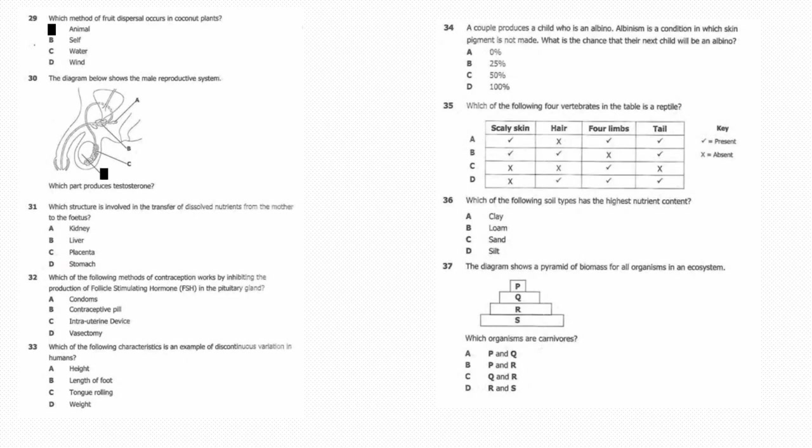Thirty-one: Which structure is involved in the transfer of dissolved nutrients from the mother to the fetus? The answer is C, the placenta. Thirty-two: Which of the following methods of contraception works by inhibiting the production of follicle-stimulating hormone in the pituitary gland? The answer is B, a contraceptive pill.